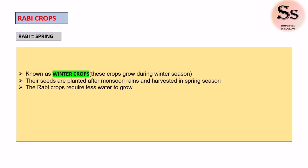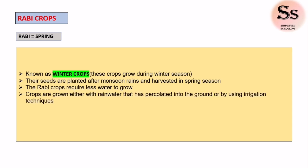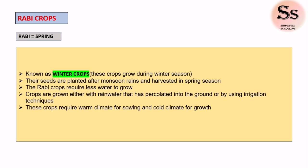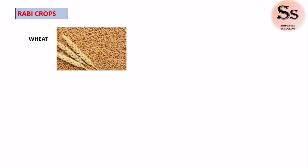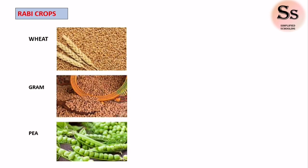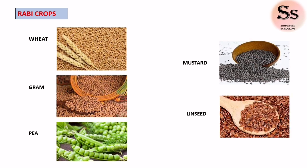Rabi crops require less water to grow; therefore they are normally grown either with rainwater that has percolated into the ground or by using irrigation techniques. These crops require a warm climate for sowing and a cool climate for growth. The examples of Rabi crops are wheat, drum pea, mustard, and linseed.